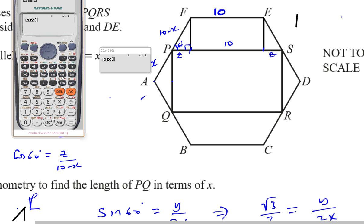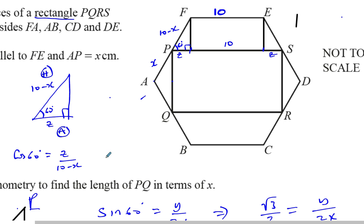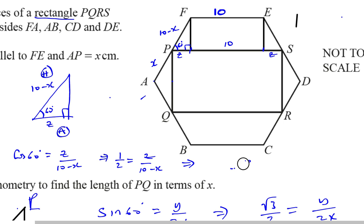So 1/2 equals Z over (10 minus x). Cross-multiplying gives 2Z equals 10 minus x. Since I need both Z values — one on each side — I can say directly that 2Z equals 10 minus x.